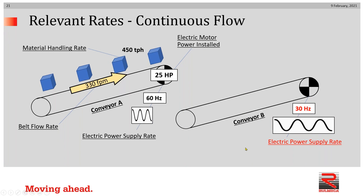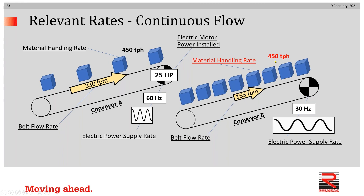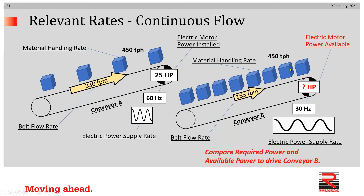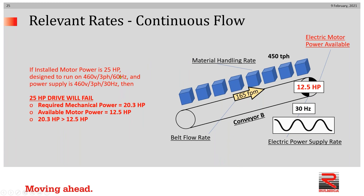Now if we look at the same parameters except we want to slow the speed down — decreasing the power supply frequency from 60 hertz to 30 hertz to set the belt speed at 165 feet per minute — we know we'll still be handling 450 tons per hour; that does not change. If we've installed a 25 horsepower motor designed to run at 460 volt three-phase 60 hertz and we decrease the supply frequency to 30 hertz, we will have a failure: required mechanical power is 20.3 horsepower, but available motor power is only 12.5. Since 20.3 is larger than 12.5, this will be a failure.